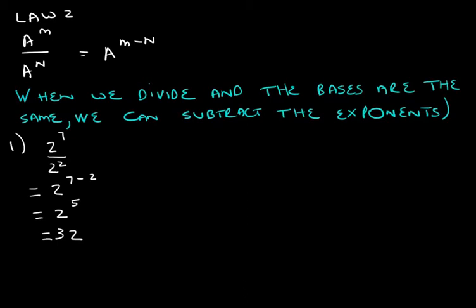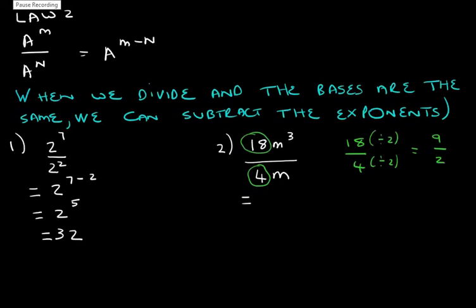Let's look at another example. Let's look at 18m cubed divided by 4m. Now we know that we need to simplify this fraction. How are we going to do this? We need to find the highest common factor for 18 and 4. So the highest common factor of 18 and 4 is 2. 18 divided by 2 is 9, and 4 divided by 2 is 2.